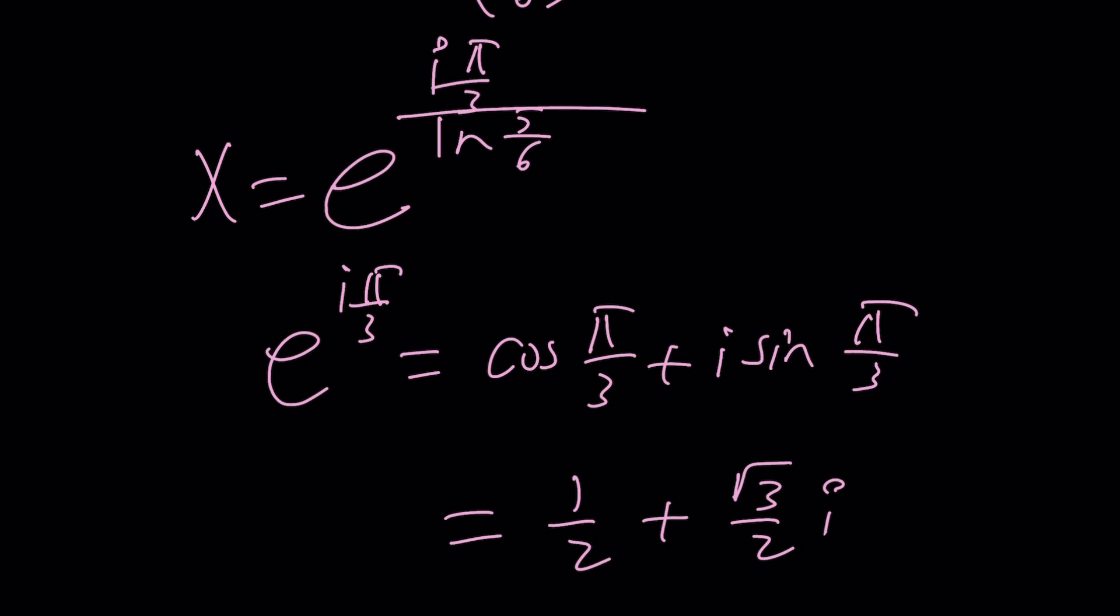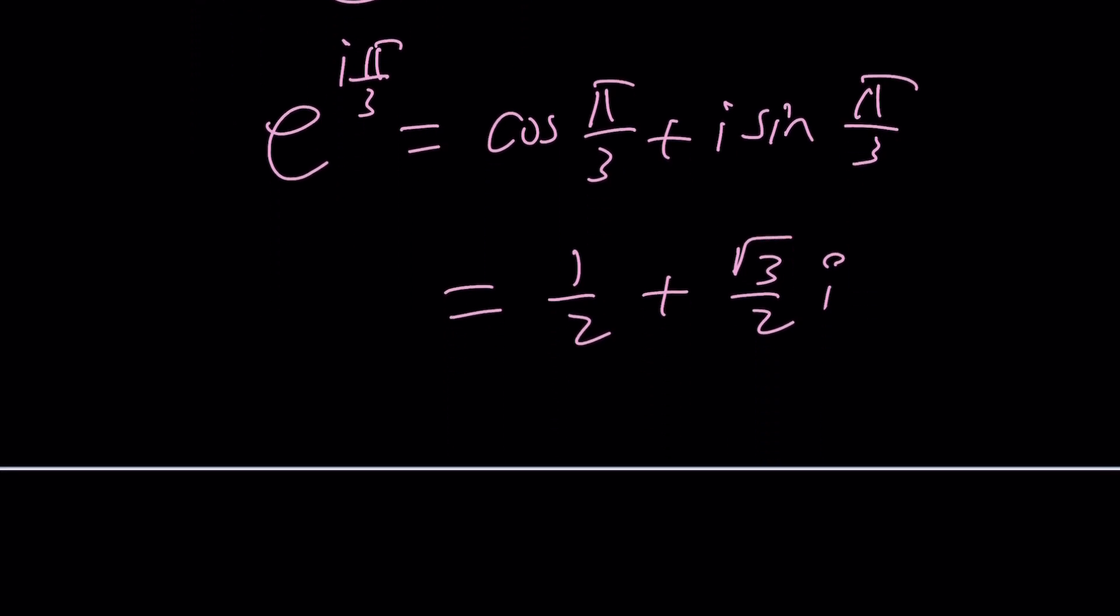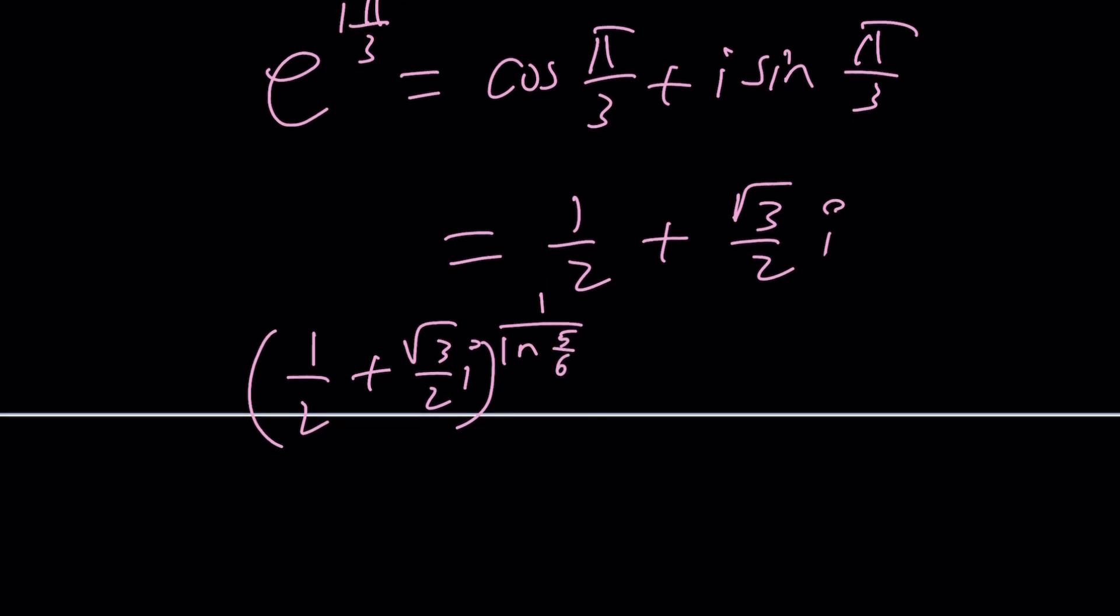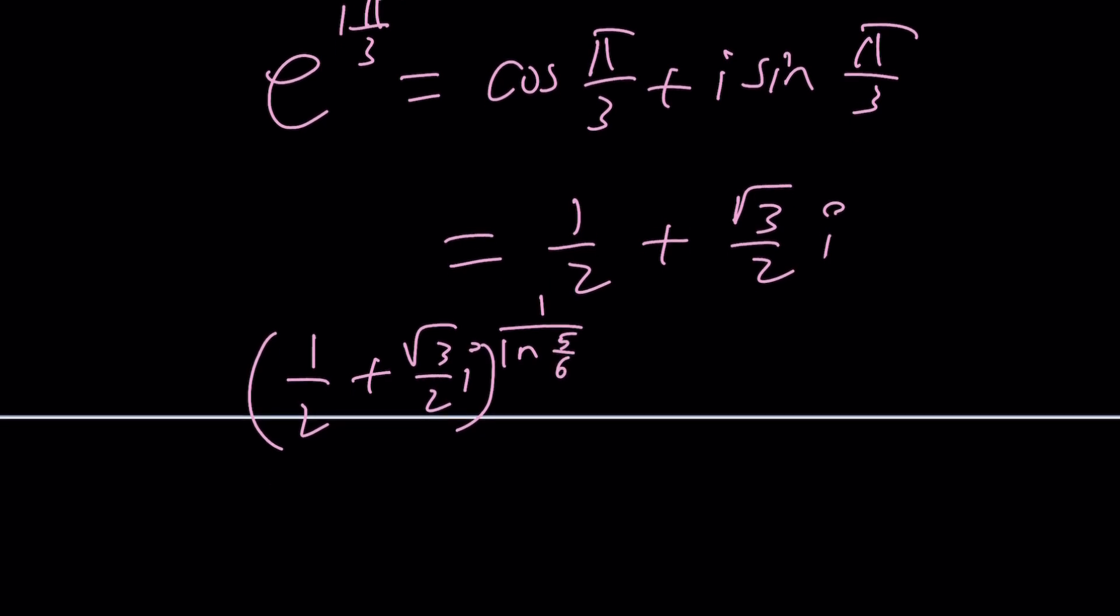Then that number is to the power ln 5 over 6. But that's with a 1 over, so it's going to look like this, which is really weird. You can convert it to so many other forms. To take care of that, you could use complex exponentiation one more time. But this is one of the solutions.